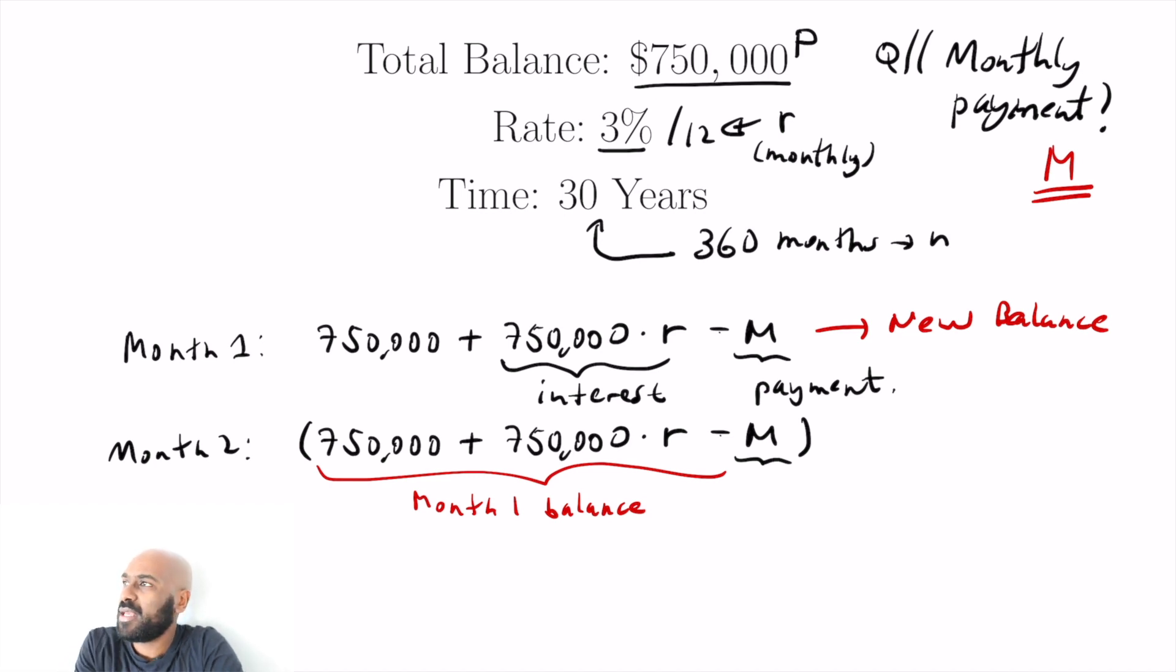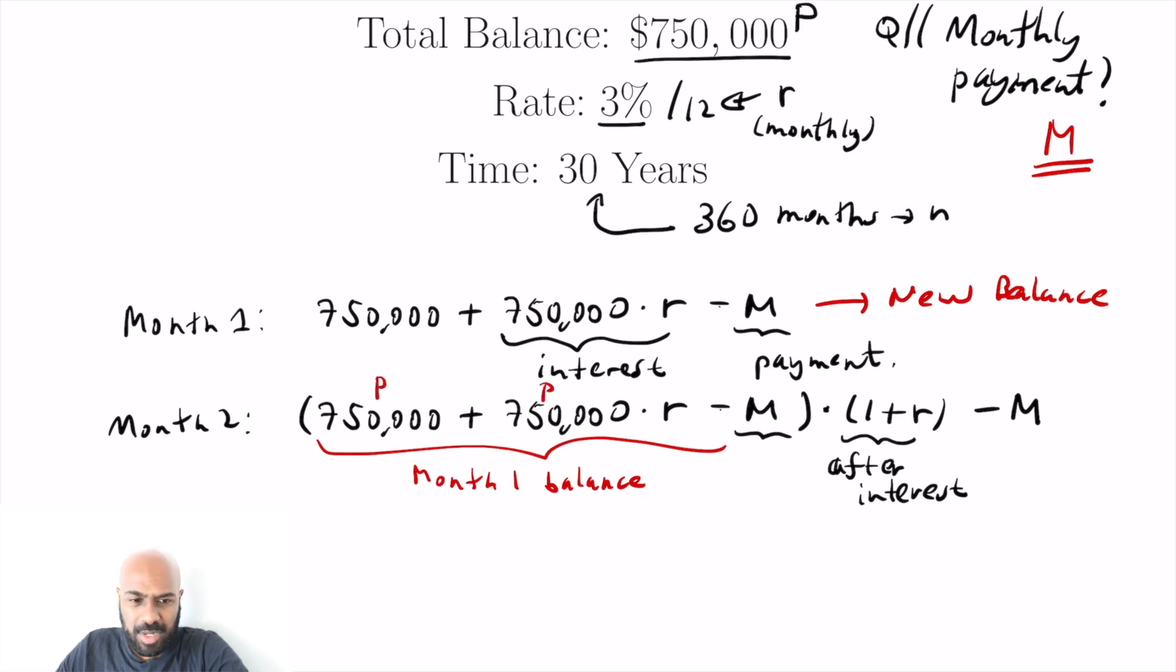And you want to multiply that again by your interest. But the interest gets added on. So it's one plus whatever the rate of your interest is multiplied by that month one balance, right? So that's after interest. Okay. And then we pay M again, the monthly amount. So I guess the idea is I'm trying to get an expression here where I just keep doing this and see if there's a pattern